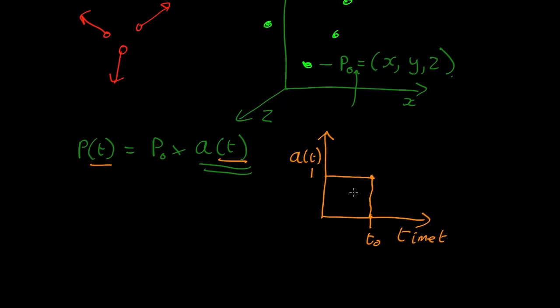We'll define the scale factor at the present day to be 1. And we know the universe is expanding, so it's going up like this. So in the future, a(t) will be more than 1, and in the past, it'll be less than 1.